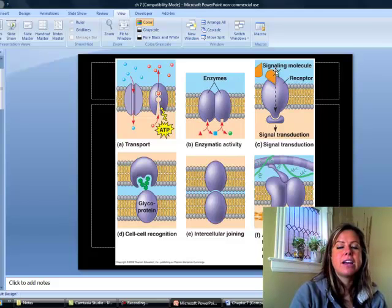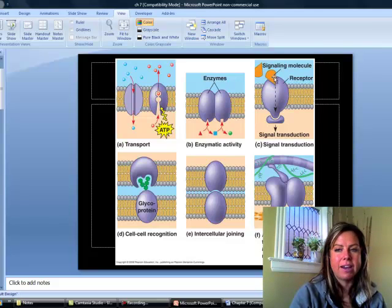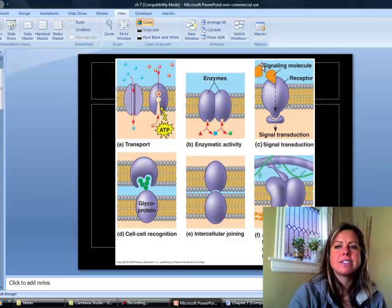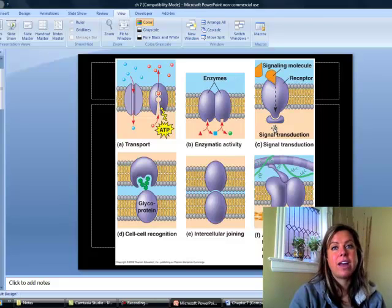Another one is that they can actually transmit signals. So something can attach to the protein on the outside. It never actually has to come in. And it can send a chemical signal to the inside of the cell to trigger some sort of response. For example, let's say that you ate a bunch of sugar and now it's time to make insulin. So the signal comes, hey, you ate a bunch of sugar. And then that signal is going to come through to the inside of the cell that says, okay, let's get those processes going to make some insulin.